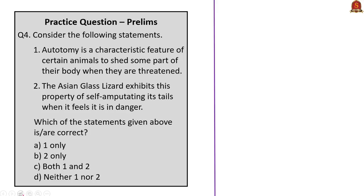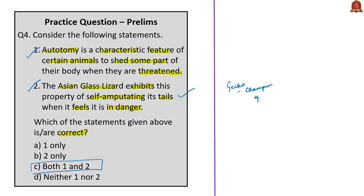The fourth question: consider the following statements. Statement 1: Autotomy is a characteristic feature of certain animals to shed some part of their body when they are threatened. Statement 2: The Asian glass lizard exhibits this property of self-amputating its tails when it feels it is in danger. Both statements are correct — nature has blessed certain animals and reptiles to save themselves from dangers by exhibiting this property. The correct answer is option C, both 1 and 2. The author in today's article also said that the gecko is the champion in exhibiting this property.